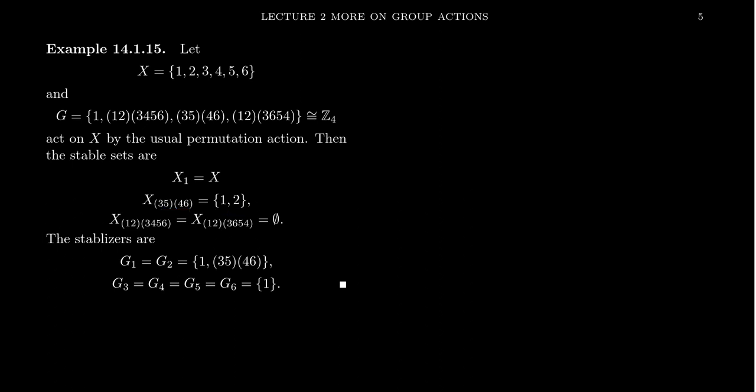For the other elements — the permutation (1 2)(3 6 4 5) and its counterpart — nothing is left fixed, so the stable set is empty. In general, with permutation actions, it's easy to identify stable sets: you look at the cycle decomposition and the stable set is all those elements which are not listed in any cycle, because we typically omit fixed elements from cycle notation.